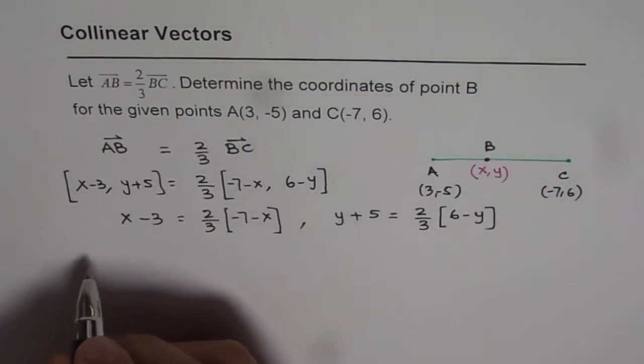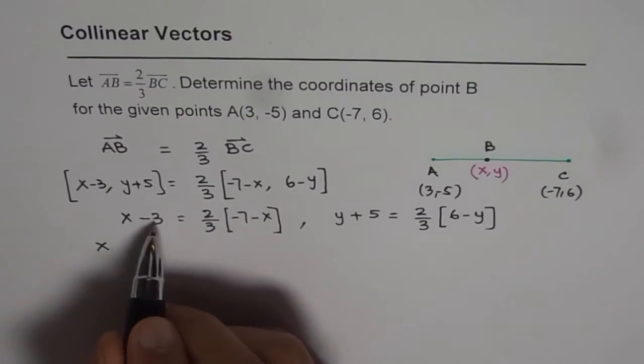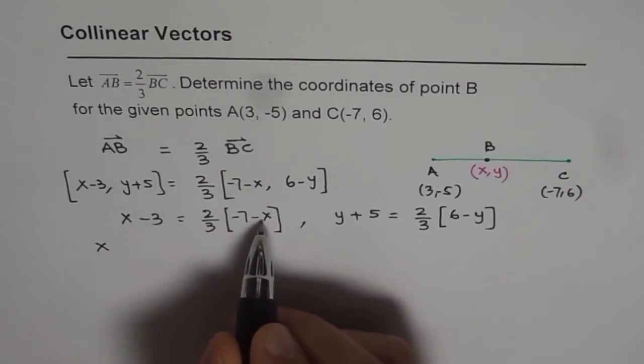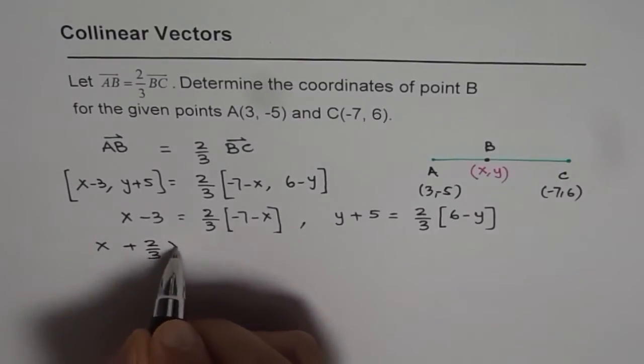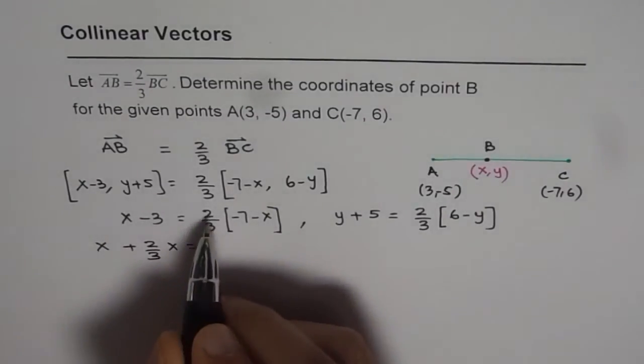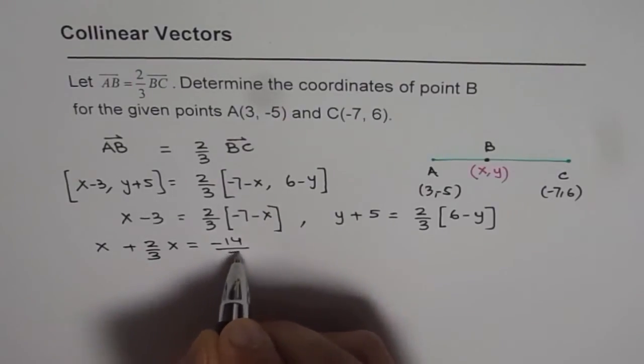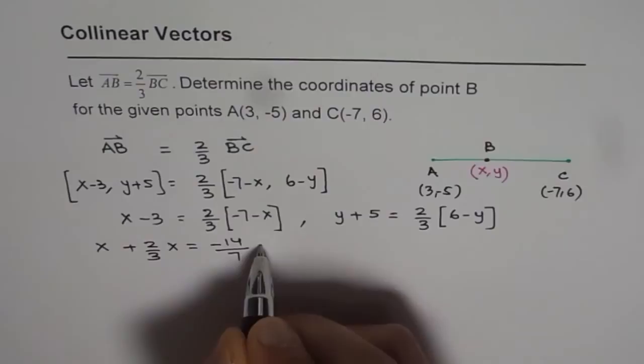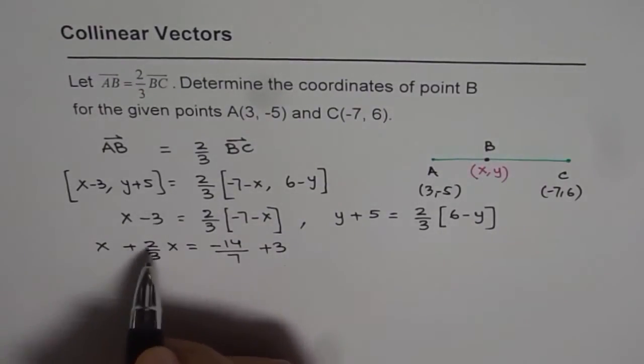So we get, we will take minus 3 to the other side, bring this X to this side. So X plus 2 thirds of X equals 2 times 7 is 14, so minus 14 over 3. We will bring this 3 to the right, plus 3. Now we can solve for X. So it is 3 plus 2 is 5.